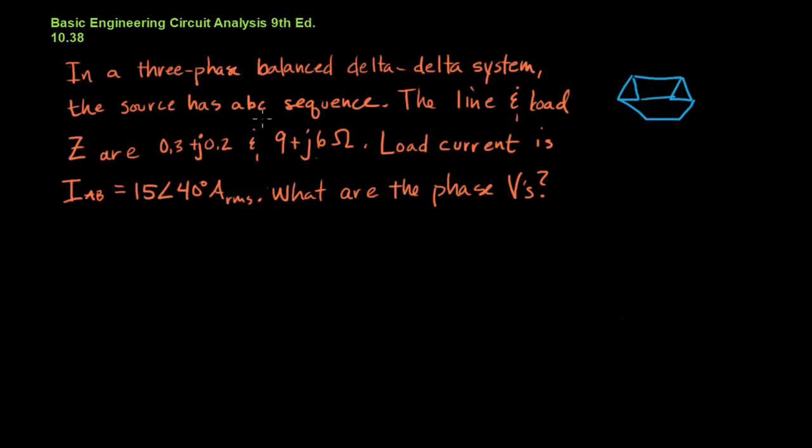It has an A-B-C sequence. That's giving us key information about labeling or about assigning the phase angles at the very end of the problem. So we'll come back to the sequencing at the end. Then we're given a line and a load impedance. And those are just for drawing into our circuit.